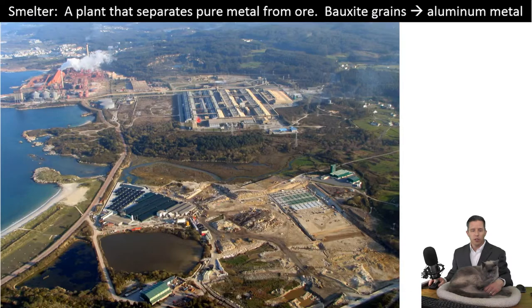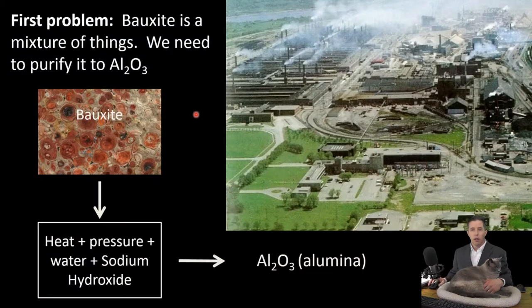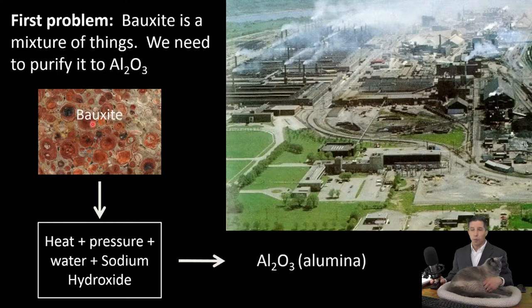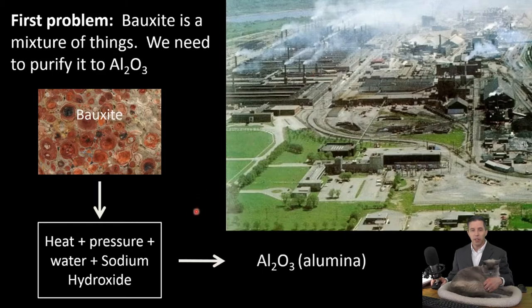The problem is bauxite is a mixture of things, and they want to purify it to a pure compound Al₂O₃. They want to get rid of everything else. So they take the crushed bauxite and subject it to heat, pressure, water, and sodium hydroxide — basically like drain-o, a strong base — and they cook it. Everything that's not Al₂O₃ gets dissolved away. You can see all these smokestacks on the smelter, which tells you there's air pollution being produced. At the end of this process you have Al₂O₃, which we also call alumina.